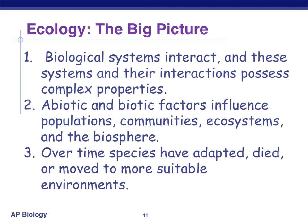So what's the big picture from the last ten slides? Biological systems interact and it's not always a simple process. Abiotic and biotic factors can influence populations, communities, ecosystems, and the entire biosphere. Over time, species will either adapt to a circumstance or an environment, or they'll die, or they'll move on until they find a more suitable environment. Either we can do it where we are and it's fine; we can't do it where we are so we move; or we can't move and we can't do it, so we die. Those are their three options.